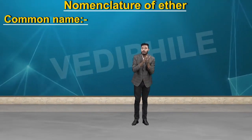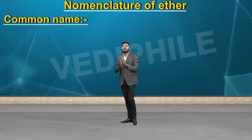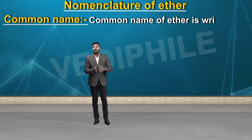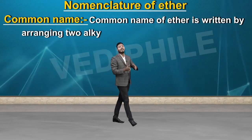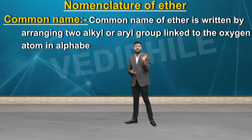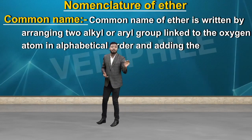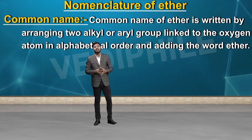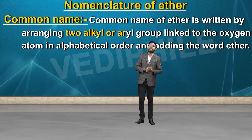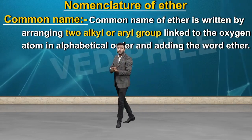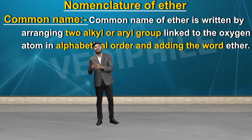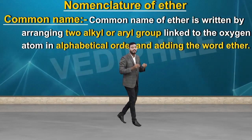We will talk about the common name. The common name is written by arranging two alkyl or aryl groups linked to the oxygen atom in alphabetical order, and adding the word 'ether'.